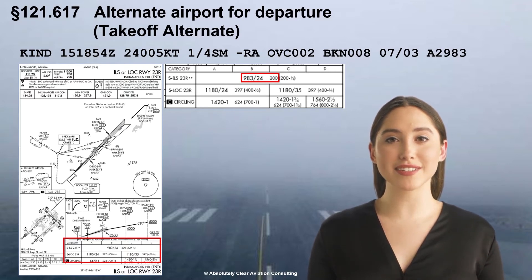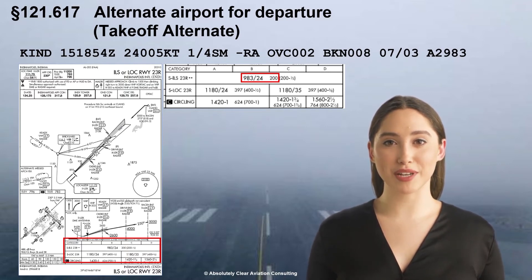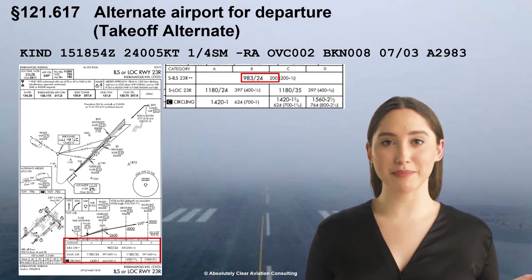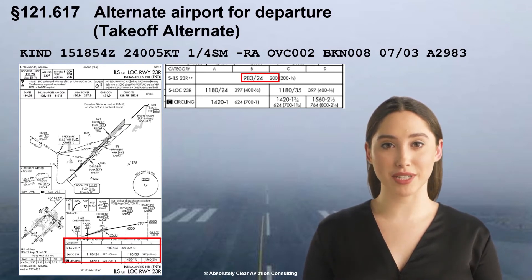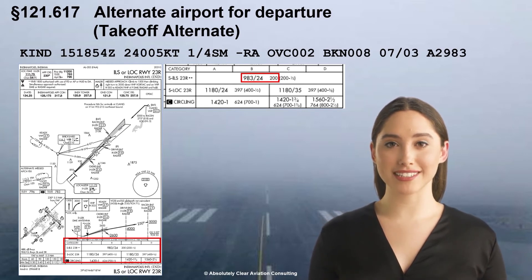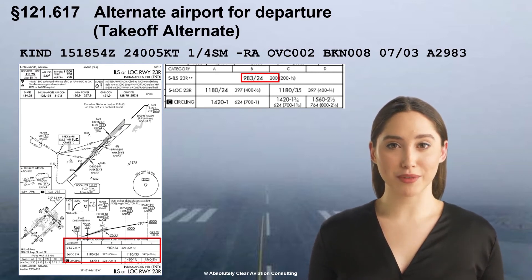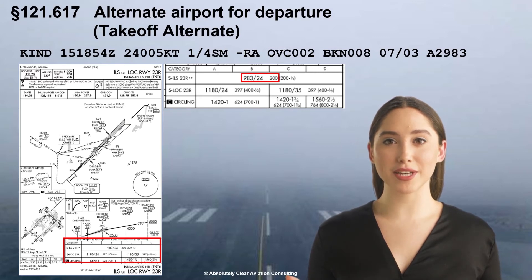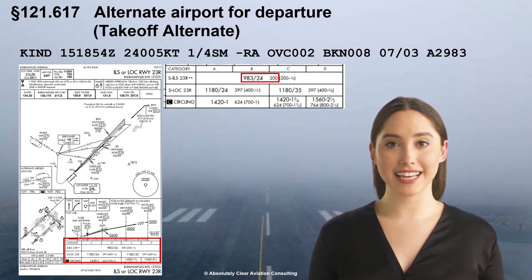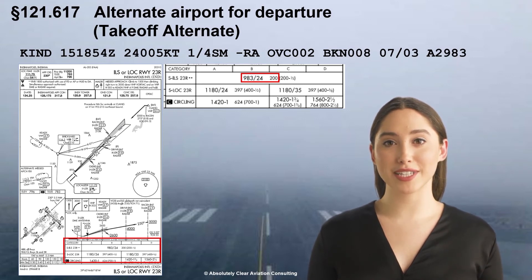Furthermore, remember that neither decision height nor minimum descent height is a weather minimum, so don't misinterpret them as a minimum ceiling to execute an approach. In addition, the applicable approach minimum may require the addition of one half statute mile per 121.652 if the pilot-in-command has not served 100 hours as pilot-in-command in Part 121 operations in the type of airplane being operated. Such a pilot is commonly referred to as a high minimums PIC since higher than normal minimums apply. Consult your air carrier's OPSPECS for details relevant to applicable approach minimums.